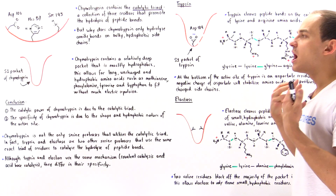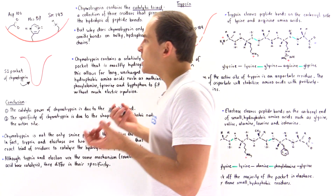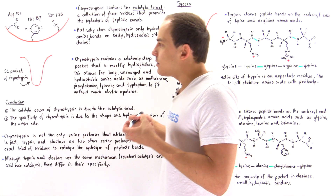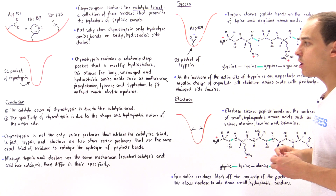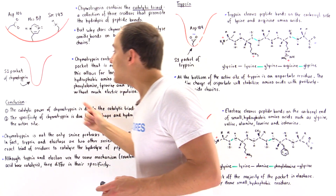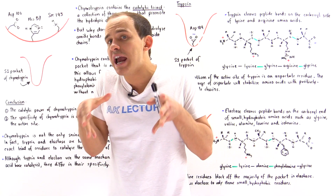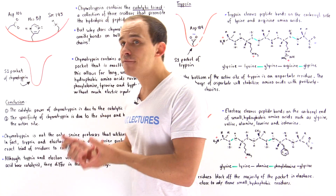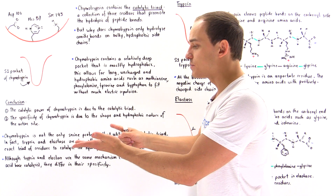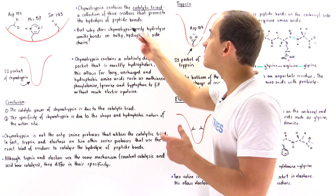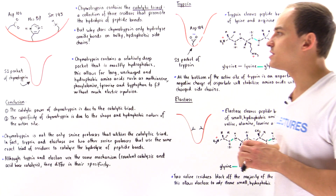Trypsin and elastase use this same exact mechanism of catalysis, but the question is why do we have different types of serine proteases inside our body, and what exactly differentiates trypsin, elastase, and chymotrypsin if they have the same exact catalytic triad? Remember, it's the catalytic triad that gives the enzyme its catalytic power — the ability to cleave those peptide bonds. But it's the shape of the active site, the S1 pocket, that determines the specificity of that protease, the type of peptide bond it actually breaks. The difference between chymotrypsin, trypsin, and elastase is not in the type of catalytic triad used, but in the shape of that particular S1 pocket.